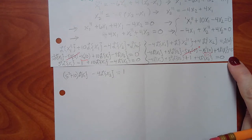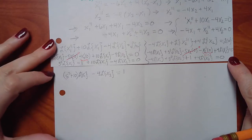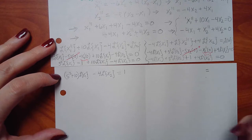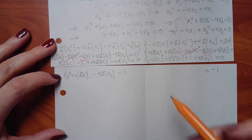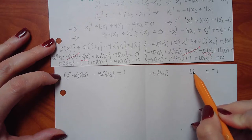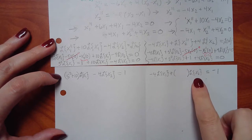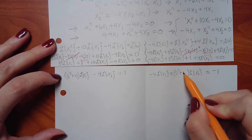Now I want to set this one up exactly like I did the other one: L{X1}s together, L{X2}s together, everything else to the right-hand side. The only term that needs to move over is the 1, and when it moves it becomes negative 1. I already have them grouped, so I have negative 4 L{X1} and then, factoring L{X2} from those two terms, (S squared plus 4) L{X2}. So the second equation is: negative 4 L{X1} plus (S squared plus 4) L{X2} equals negative 1.